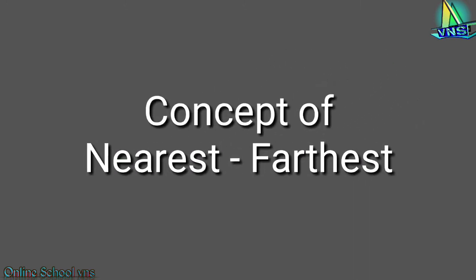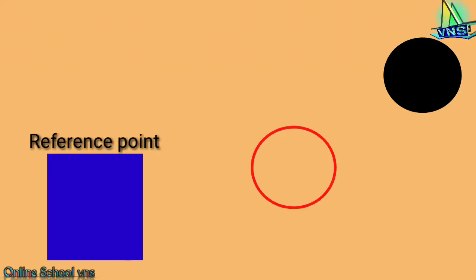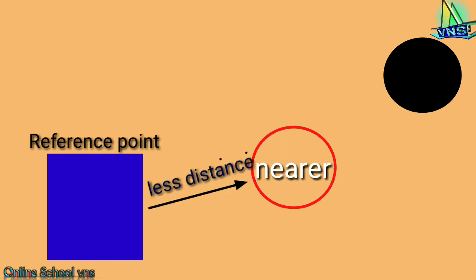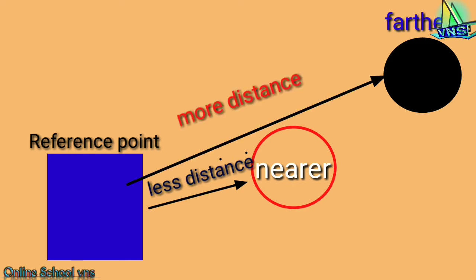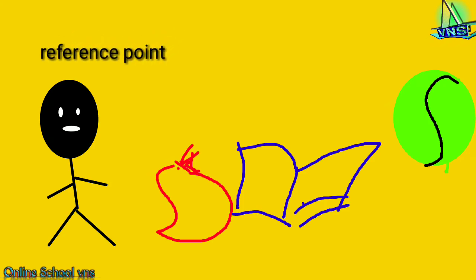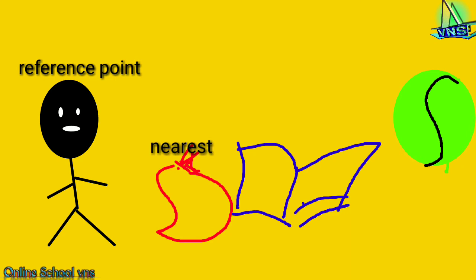Now we will discuss the concept of nearest and farthest. As we discussed, in two objects, one object is called nearer when it has less distance in comparison to the other object, and the other is called farther if it has more distance. For nearest and farthest, the object which has very less distance in comparison to the reference point is called the nearest object, and the object which has the most distance from the reference point is called the farthest object.